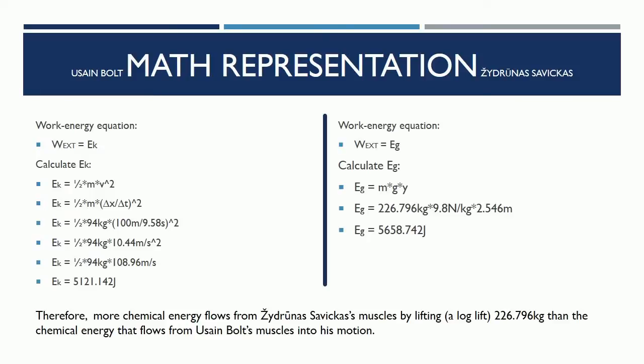Math Representation: Work Energy Equation. External work equals the kinetic energy. Calculate the kinetic energy: Ek = ½mv². Ek = ½m(Δx/Δt)². Ek = ½(94kg)(100m/9.58s)². Ek = ½(94kg)(10.44m/s)².